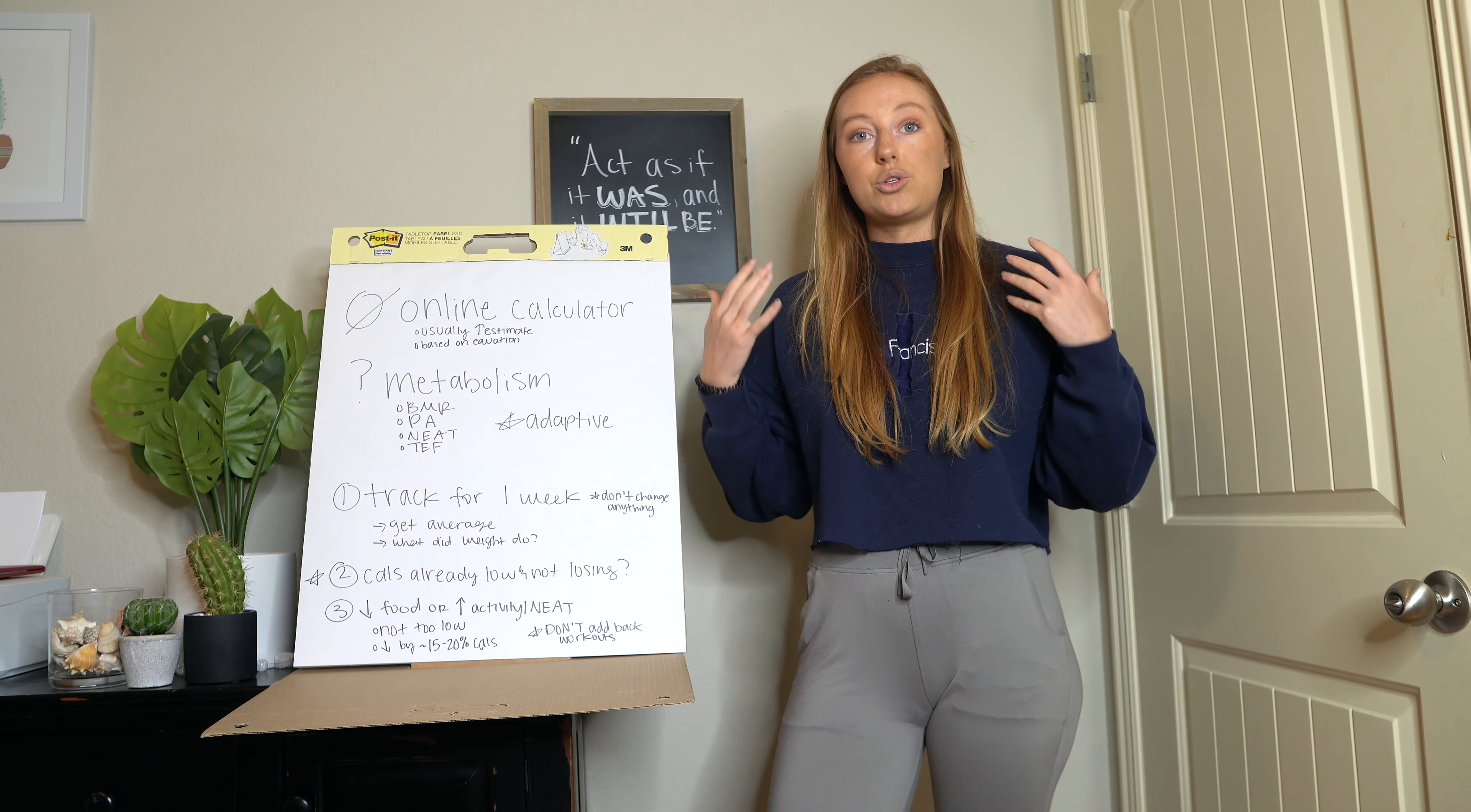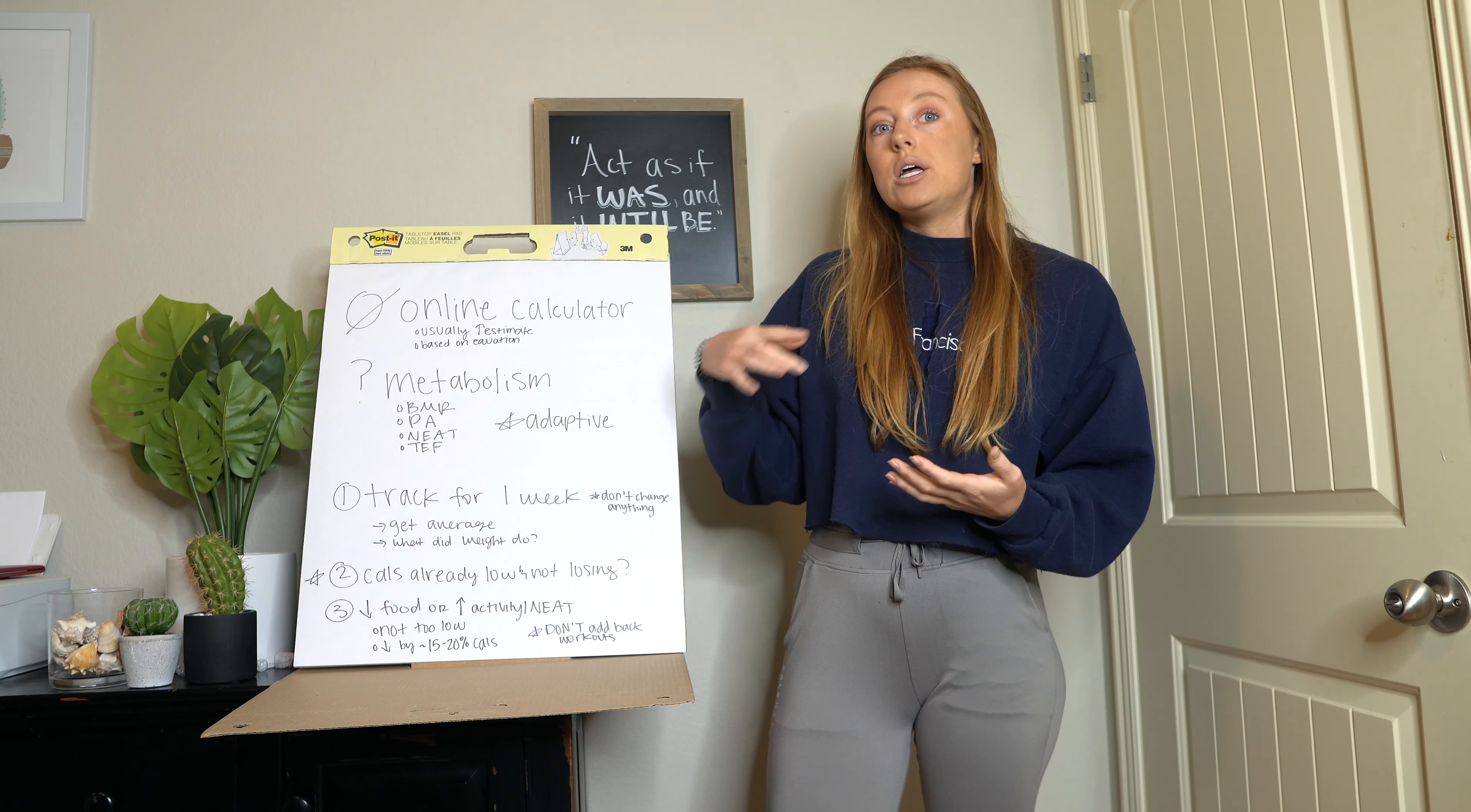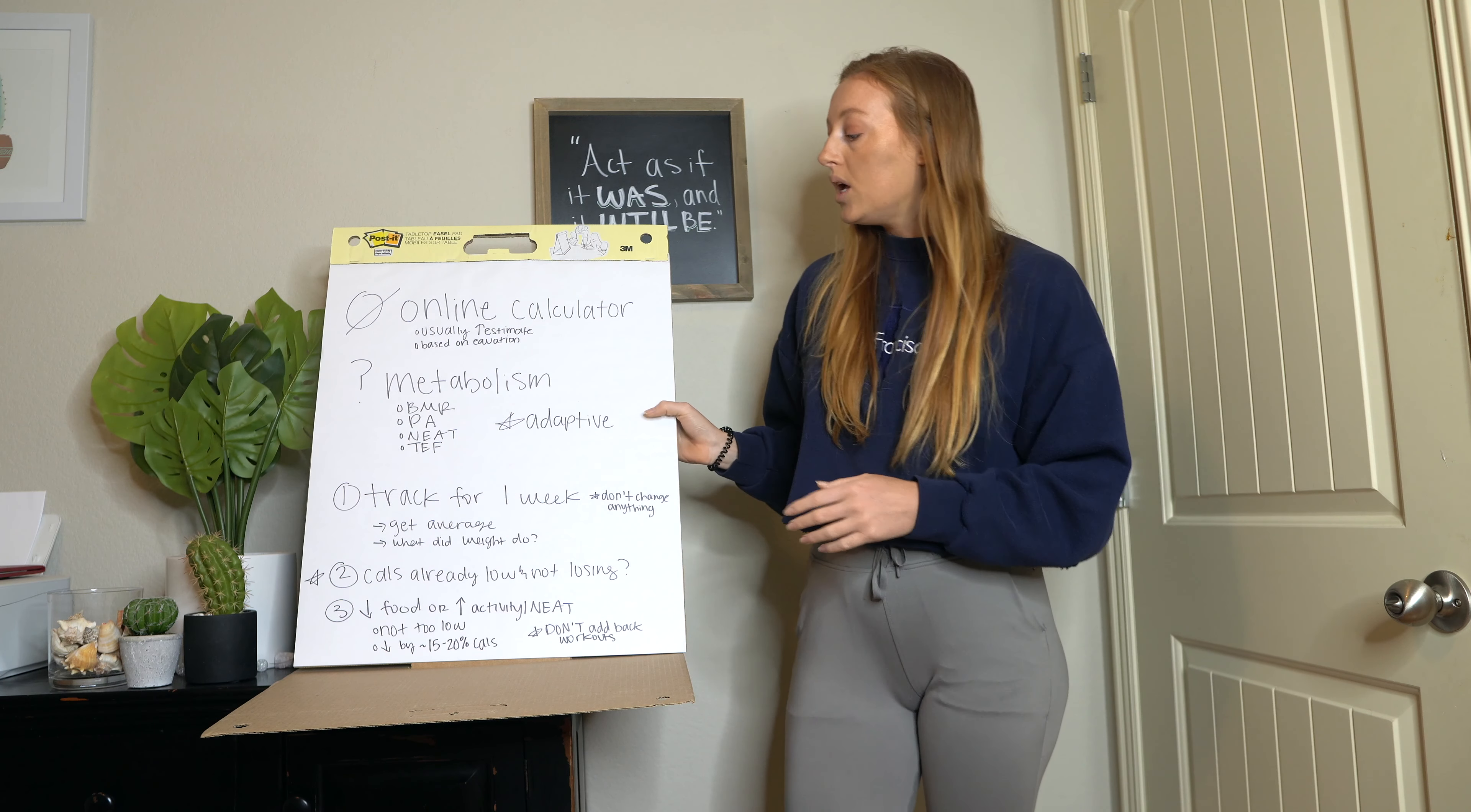So these four things really make up what we burn in a day. To be in a calorie deficit, let's say that for all of these processes we burn 2000 calories. Then to be in that deficit, we need to be eating less than 2000 calories. The thing though to remember is that our metabolisms are very adaptive. And that is one reason why online calculators is not something that I would recommend.